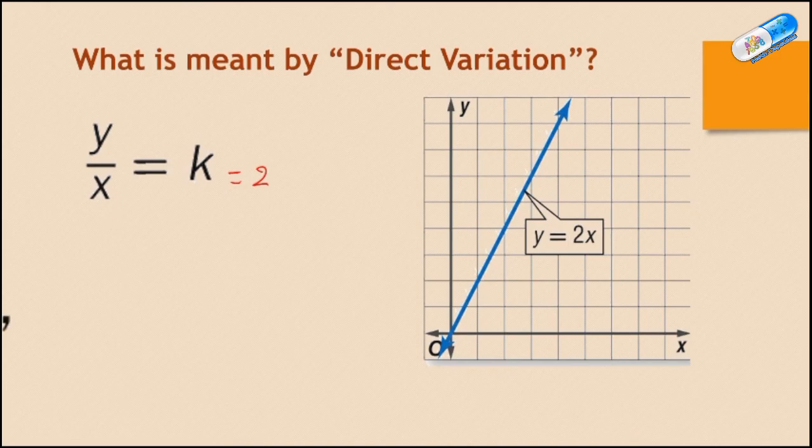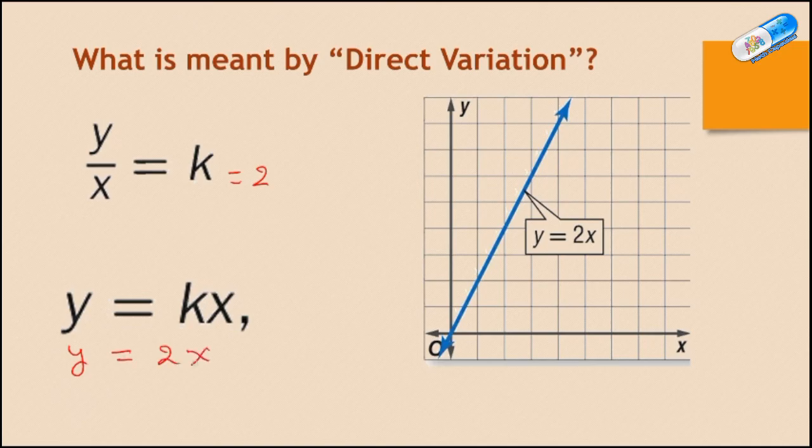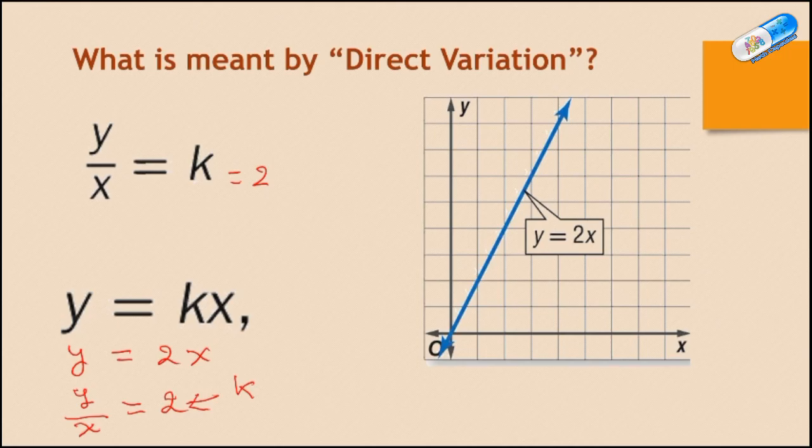So if we have y equals kx, where here in this example y equals 2x, if we get y divided by x on that side, this will give us 2 on the other side, and 2 is the constant of variation, which is k.